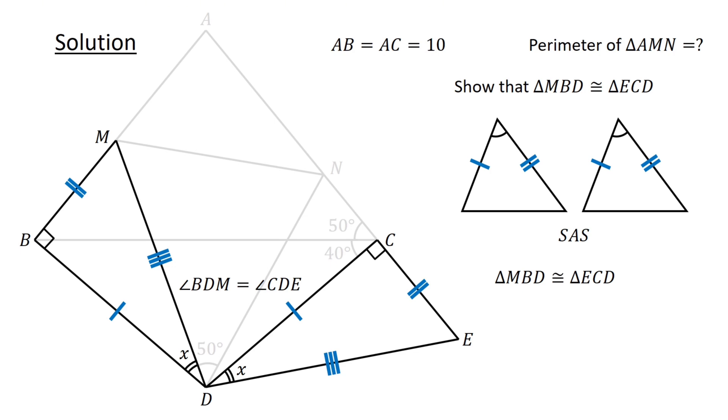Next, focus on triangle BDC. The vertex angle, angle BDC, is given by 180 degrees minus 40 degrees minus 40 degrees and thus equals 100 degrees. Following this, focus on these four line segments. Denoting angle MDC as Y, we have X plus 50 degrees plus Y equals 100 degrees. Thus, X plus Y equals 50 degrees.